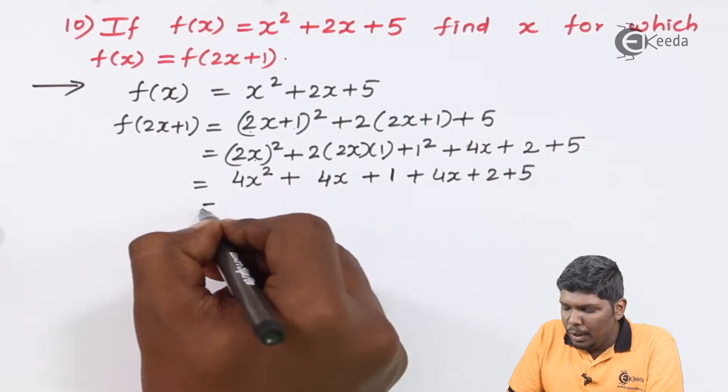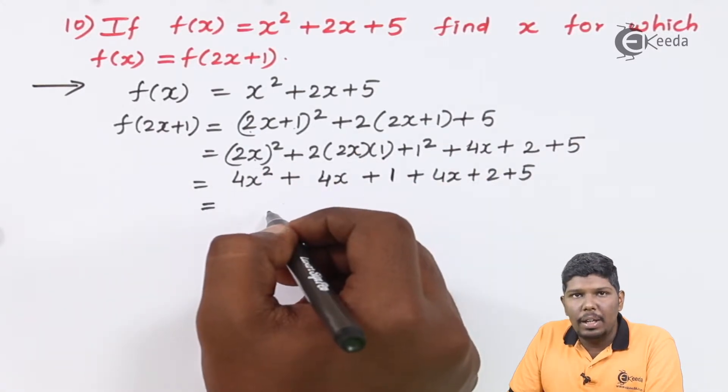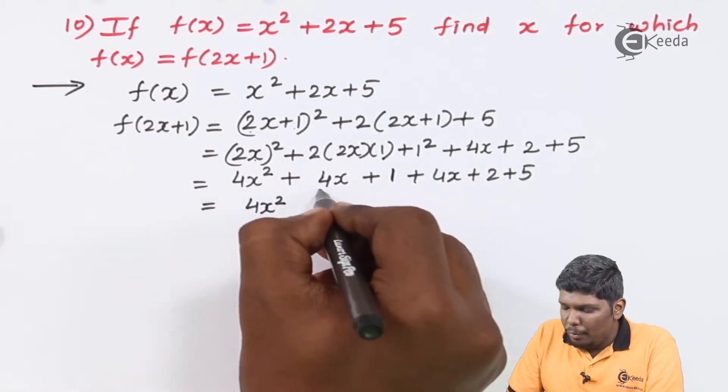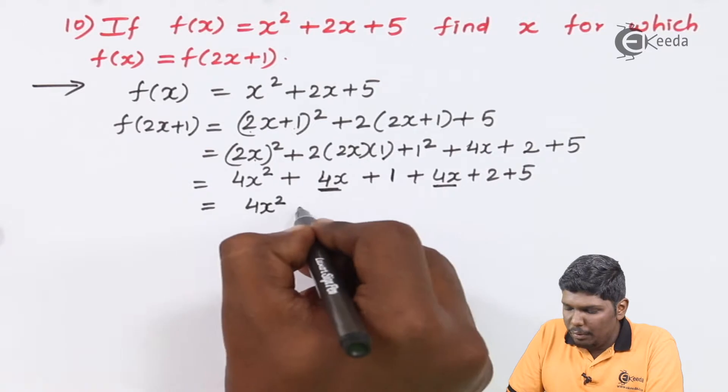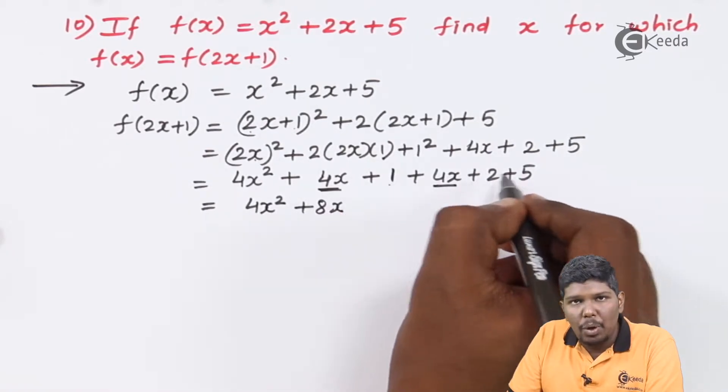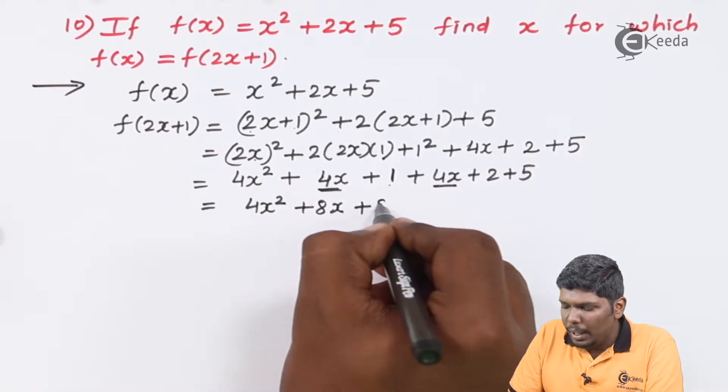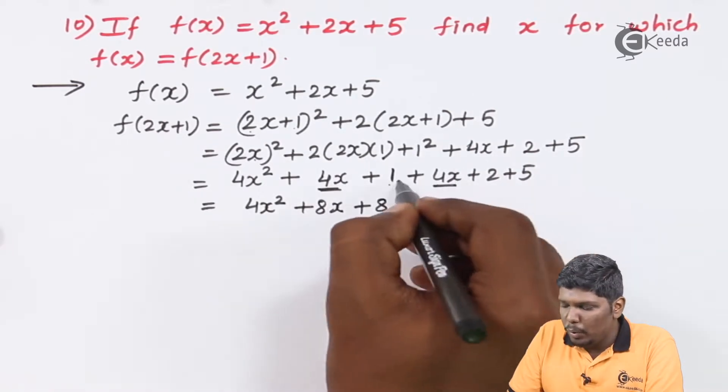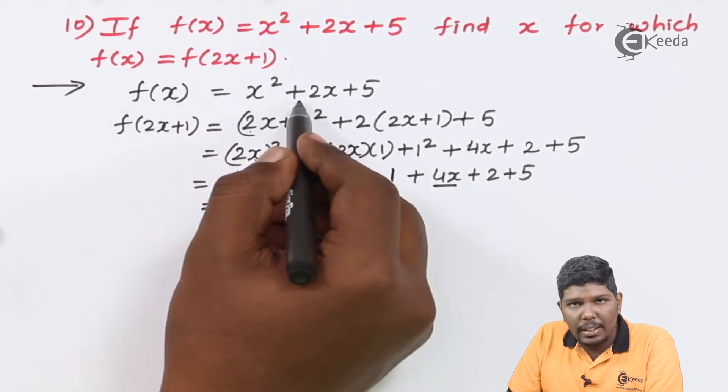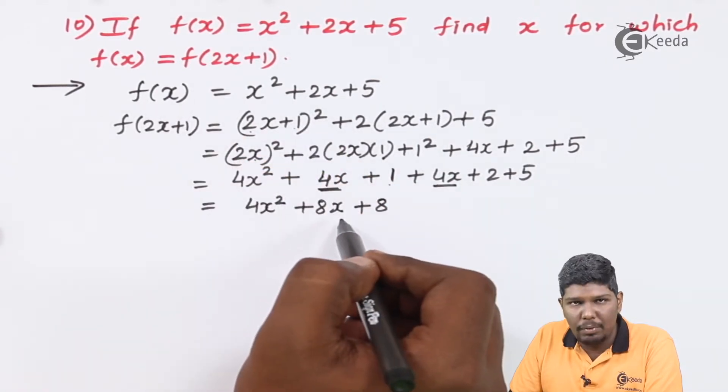Now the next step will be: 4x² + 4x + 1 + 4x + 2 + 5. The next step will include simplification of similar terms: 4x², 4x + 4x will give you 8x, and 1 + 2 + 5 = 8. So we have f(x) and we have f(2x+1).